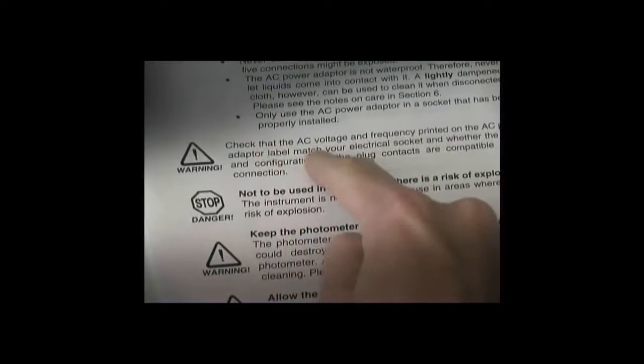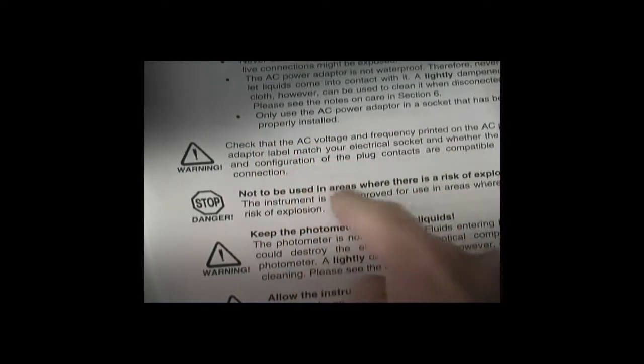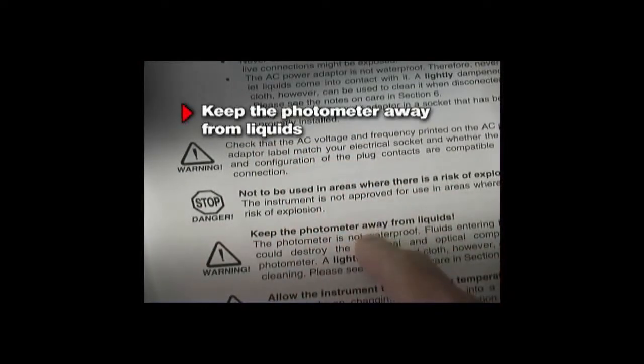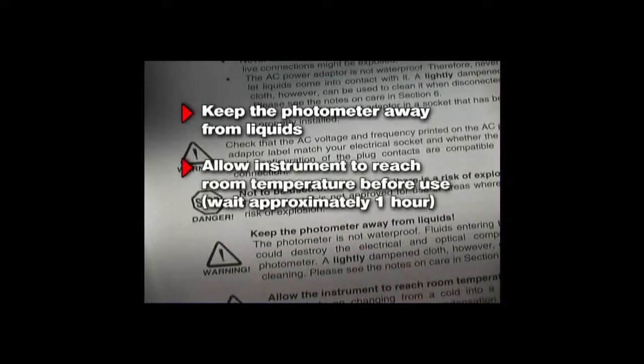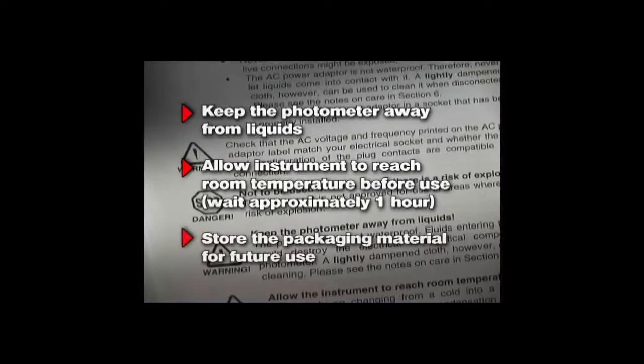Precise knowledge and attention to these operating instructions is required each time the photometer is used. Please review and follow the safety notes at the beginning of the user's guide. Remember to keep the photometer away from liquids and to allow the unit to reach room temperature before use if you are moving it from a cold environment to a warm one. Wait approximately one hour. Store the packaging material that came with your Hemopoint H2 for future use.